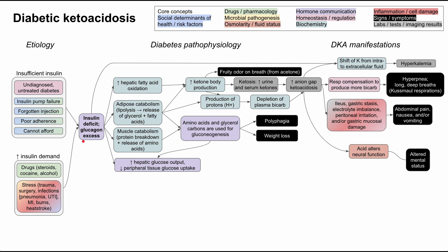The high glucagon, low insulin state increases hepatic glucose output and decreases peripheral glucose tissue uptake. Combined with new glucose from breakdown of adipose and muscle tissue, this all leads to hyperglycemia. In DKA, you'll typically have moderate hyperglycemia — around 250 to 500 mg/dL — in contrast to other diabetic emergencies like HHS where it's much higher. This hyperglycemia also contributes to abdominal pain, nausea, and/or vomiting through similar mechanisms.